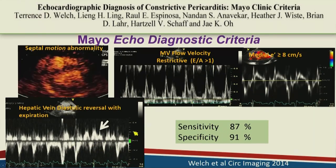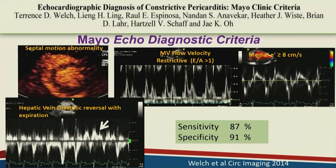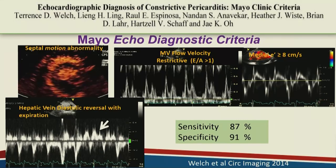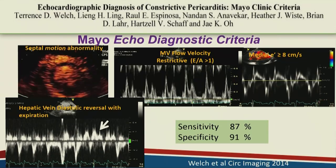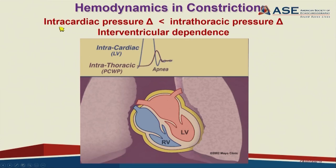If you show these four parameters in patients with right heart failure and jugular venous pressure elevation, the diagnosis of constriction can be readily made. This animation explains why those echocardiographic findings occur in constriction—they are based on intra-cardiac and intra-thoracic pressure differences with respiration and interventricular dependence.